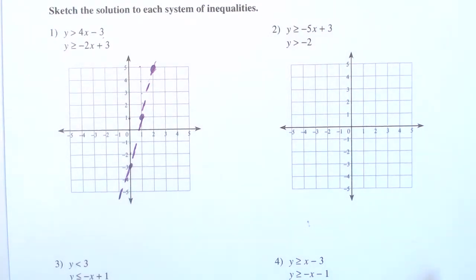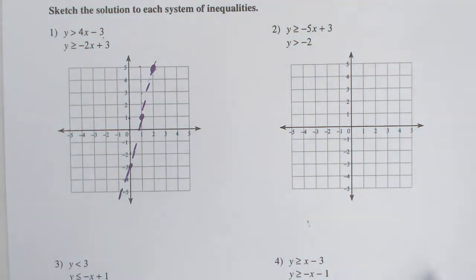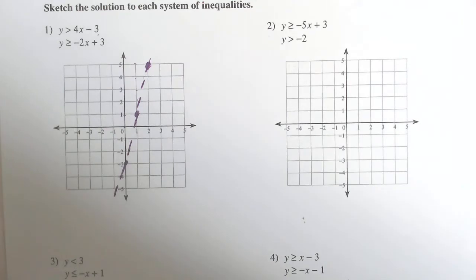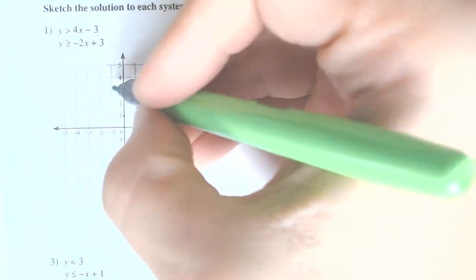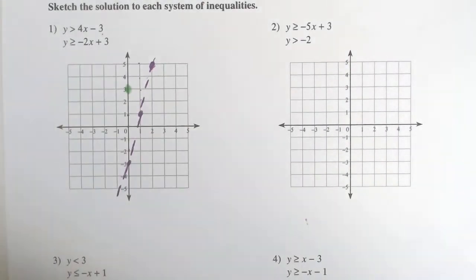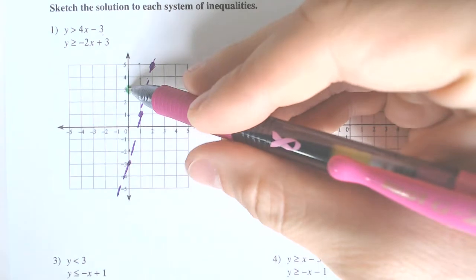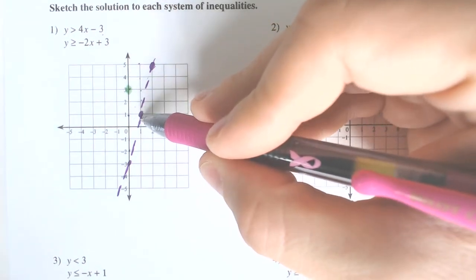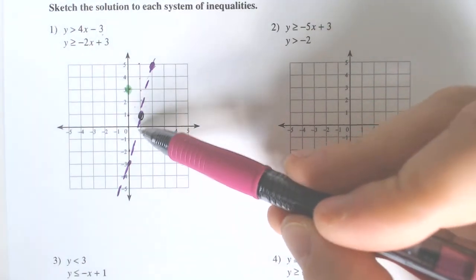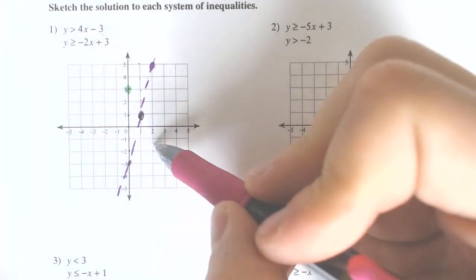So it looks like that. And then we can do the next one before I shade — I'm going to shade last. Here we got y is greater than or equal to negative 2x plus 3. The y-intercept is 3. So y-intercept is 3, and then we have to go down by 2 and over by 1 — down by 2 over by 1, down by 2 over by 1, and so on and so forth.